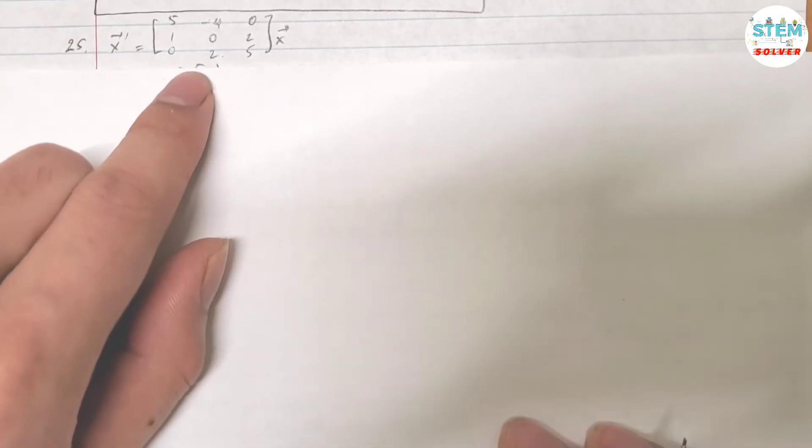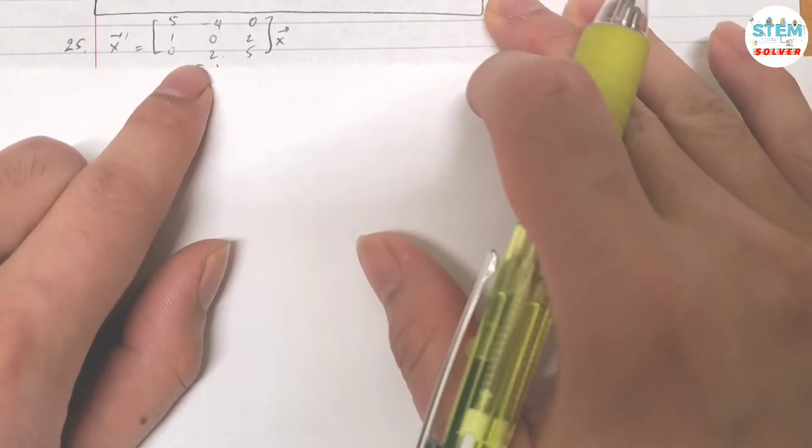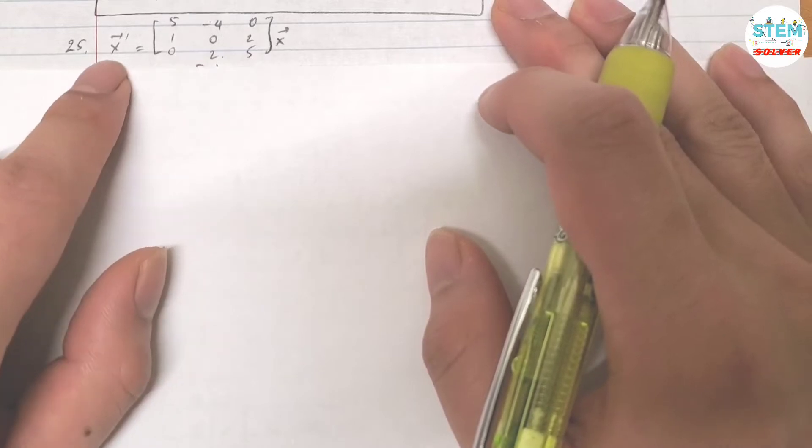Find the general solution of the given system. So your given system in terms of vector x prime.